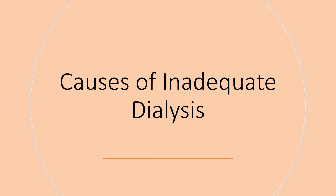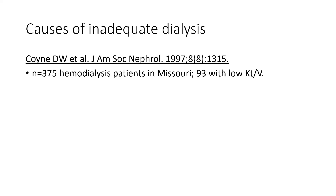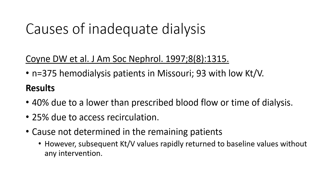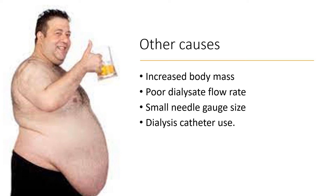Let's now talk about some of the causes of inadequate dialysis. A study published in 1997 looking at almost 400 hemodialysis patients in Missouri found that 93 had a low Kt/V: 40% were due to lower than prescribed blood flow or duration of dialysis, and 25% were due to excess recirculation. Other causes of low Kt/V include increased body mass — remember, dividing K by a very large V decreases your adequacy estimate. Additionally, not dialyzing with a high enough dialysate flow rate, using a needle gauge that's too small, or using catheters — which are associated with more recirculation than fistulas.